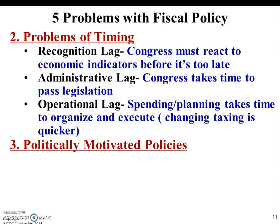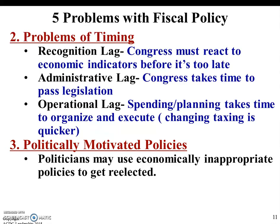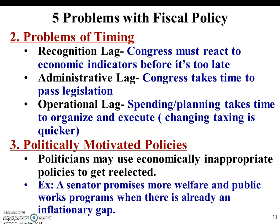The last problem is politically motivated policies — politicians may use economically inappropriate policies to get reelected. For example, a senator promises more welfare and public works programs when there is already an inflationary gap. Today we looked at fiscal policy and gave you a brief overview of what it means and how Congress uses it to help speed up or slow down the economy — increasing spending and decreasing taxes to grow the economy, or decreasing spending and increasing taxes to slow it down. If you have any questions, please ask me or Ms. Rosenfeld. Talk to you later.